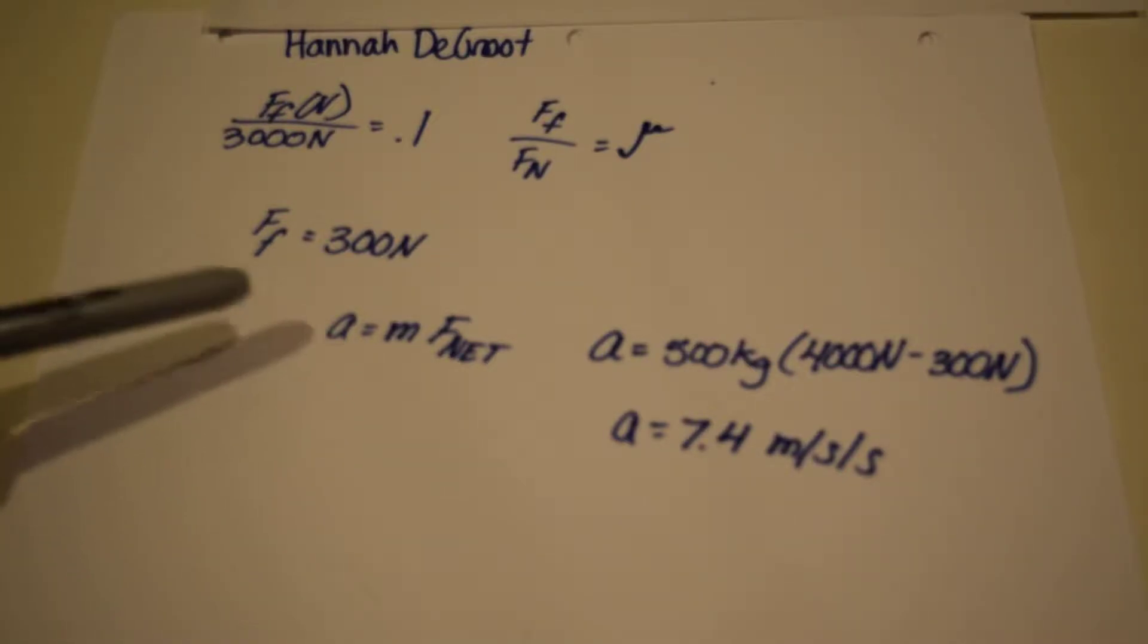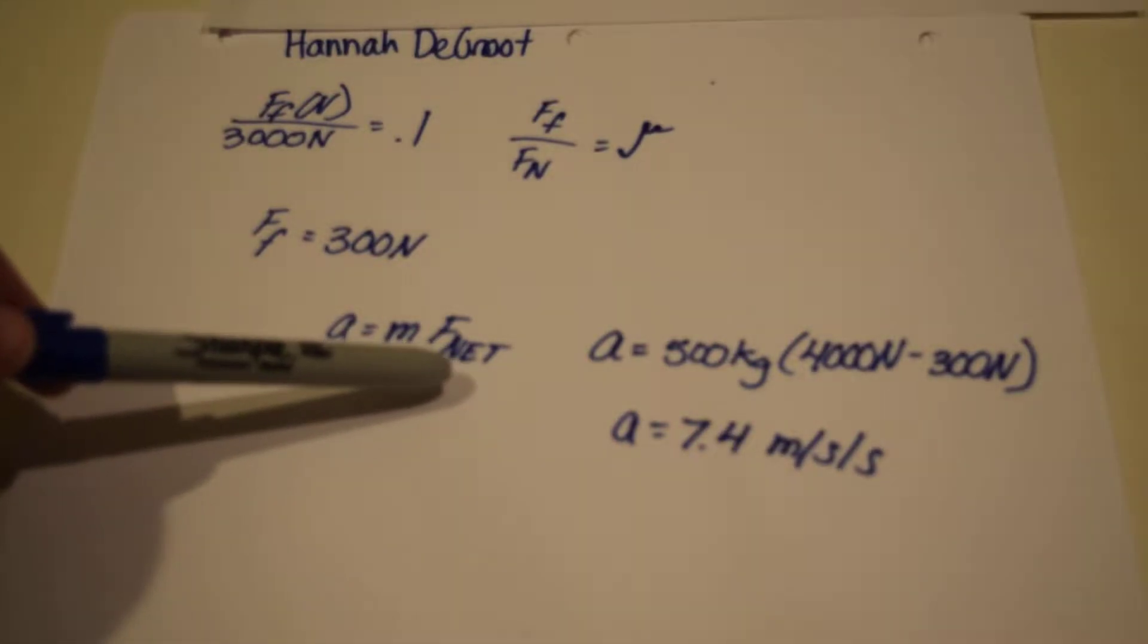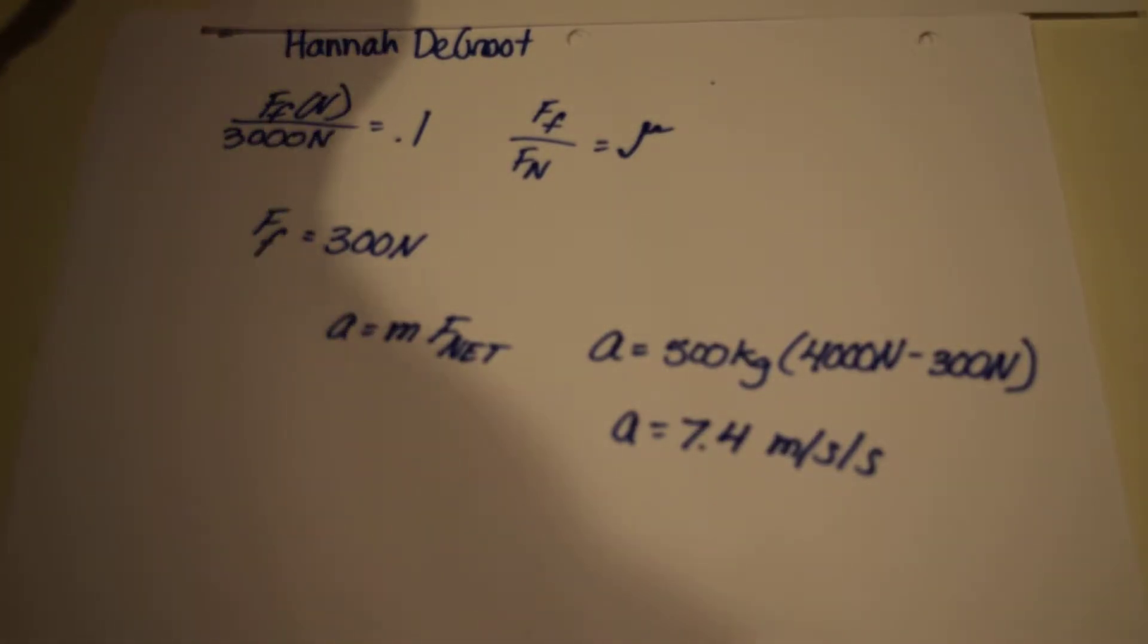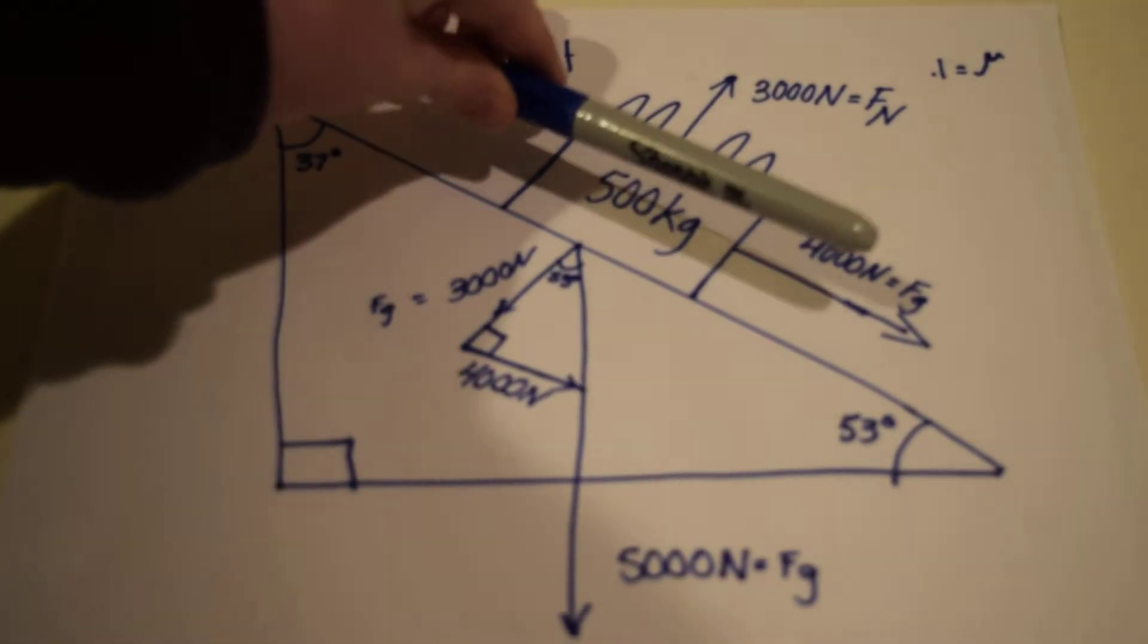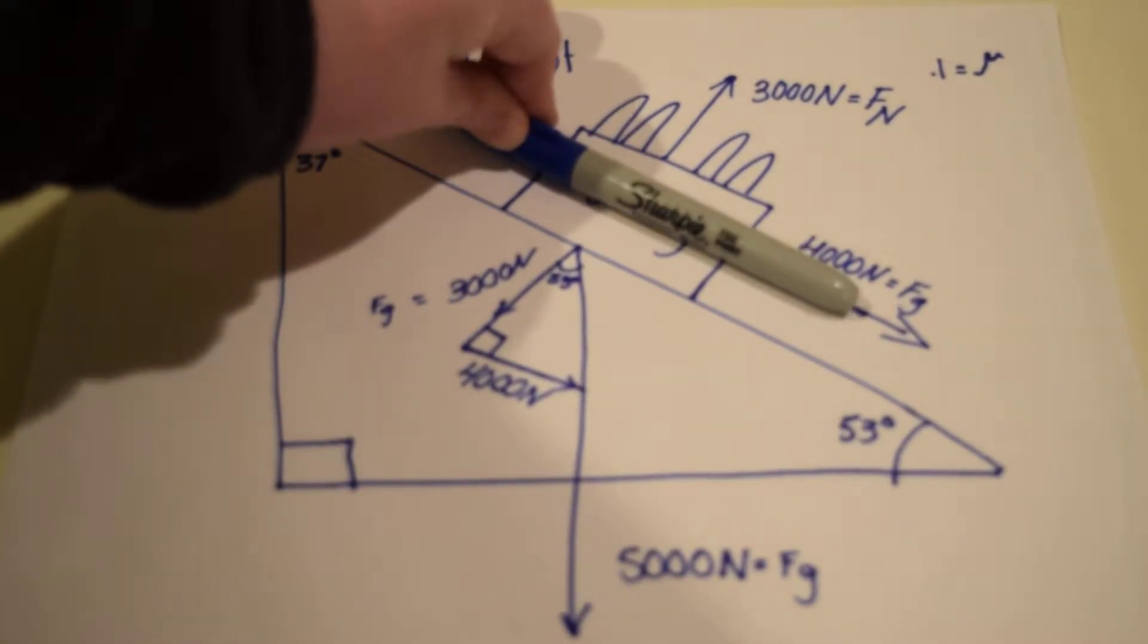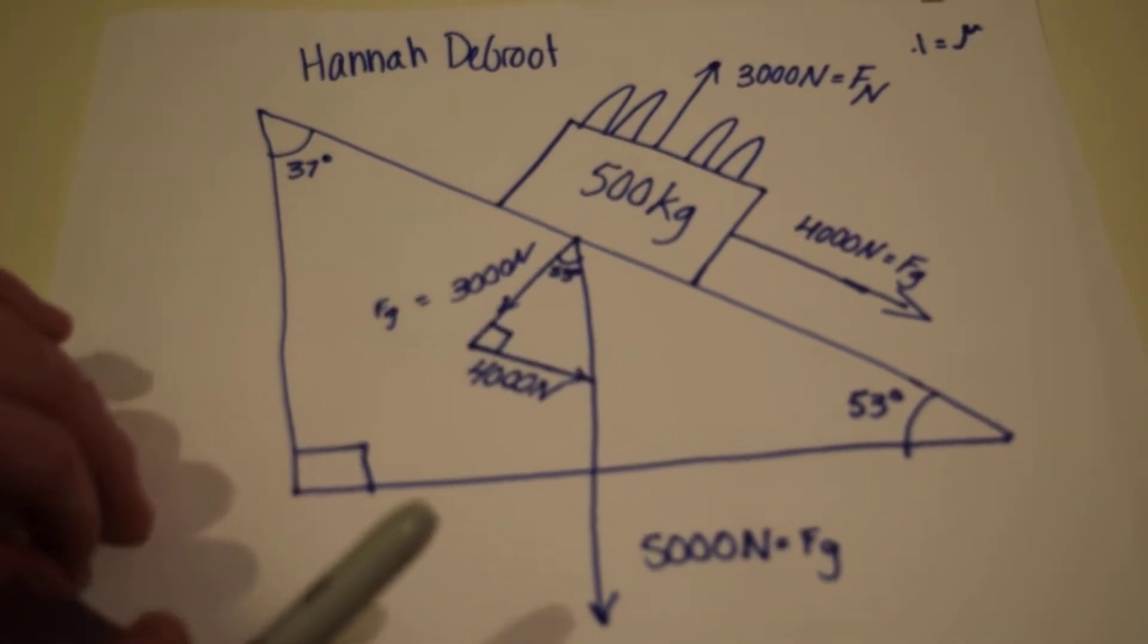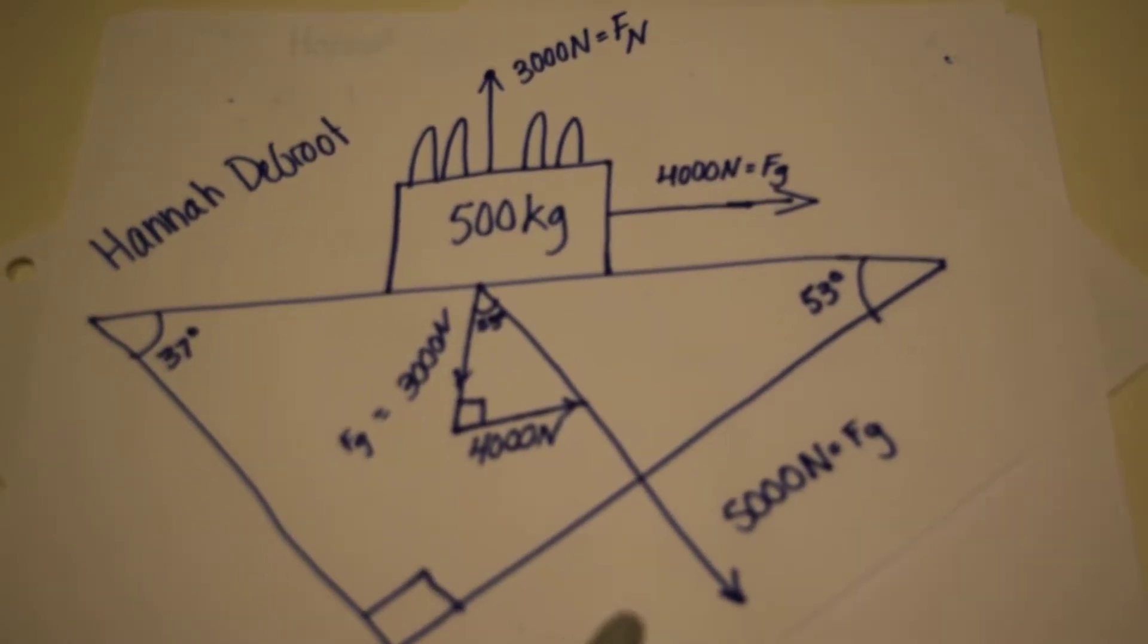And now to finally find the acceleration we know that the formula for that is F equals mass times acceleration. So we're just trying to find, let's look at the original here. So even though this is not in itself horizontal, we want to find the acceleration going that way.